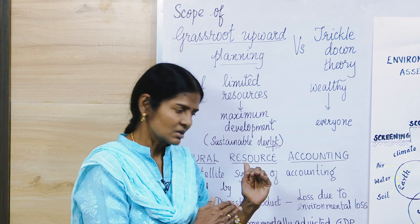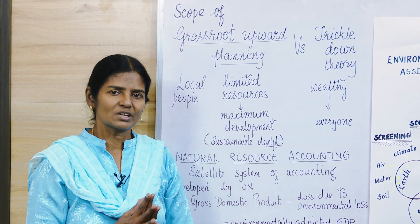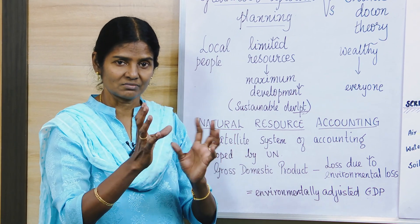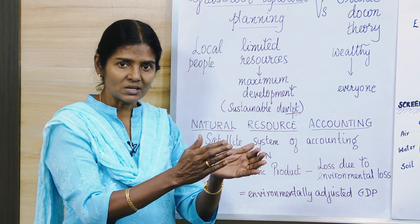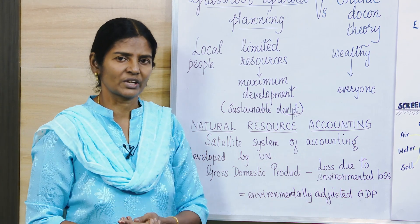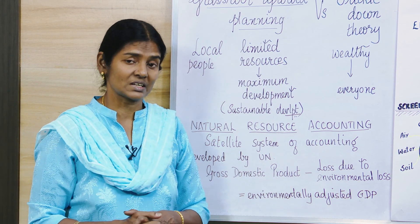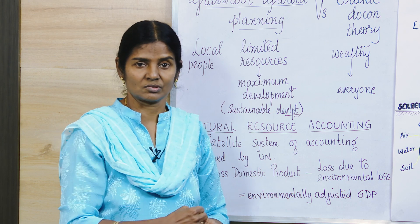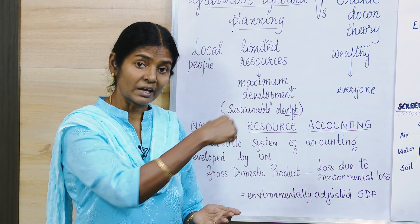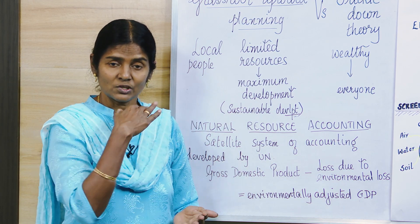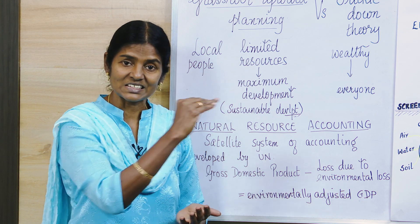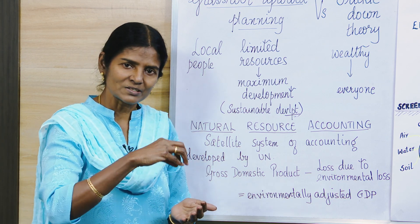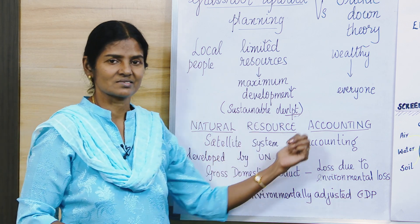The next topic is natural resource accounting. Usually, when countries set up big projects, they only account for profit and loss — the cost involved and the profit expected. But in the process, they have always missed the cost of natural resources, the loss and degradation of the environment. For example, cutting down trees leads to soil erosion and degradation of the soil. That also has to be taken into account — that is what natural resource accounting is about.